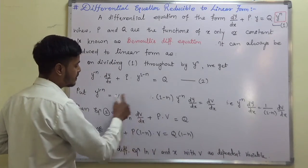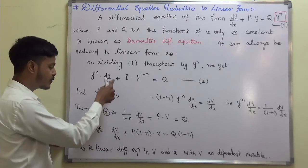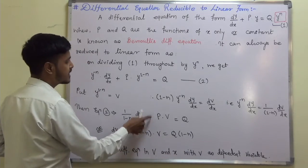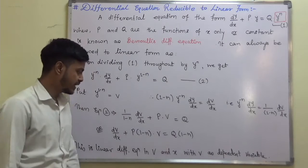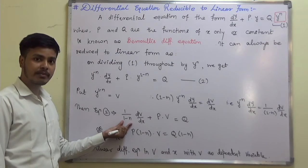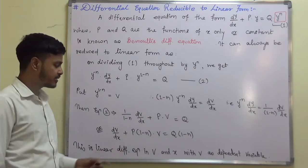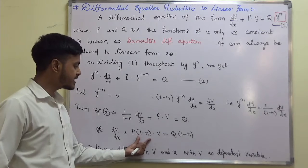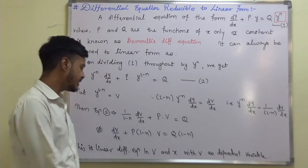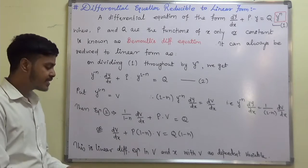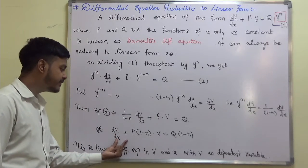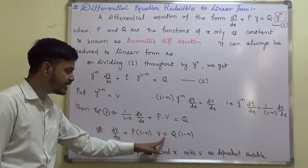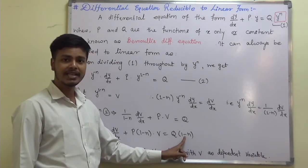Substituting into equation 2 gives (1/(1−n))·dv/dx plus P·v equals Q. Multiplying throughout by (1−n) yields dv/dx plus P(1−n)·v equals Q(1−n). This is nothing but the linear differential equation of the form dv/dx plus P(x)·v equals Q(x), with v as the dependent variable.